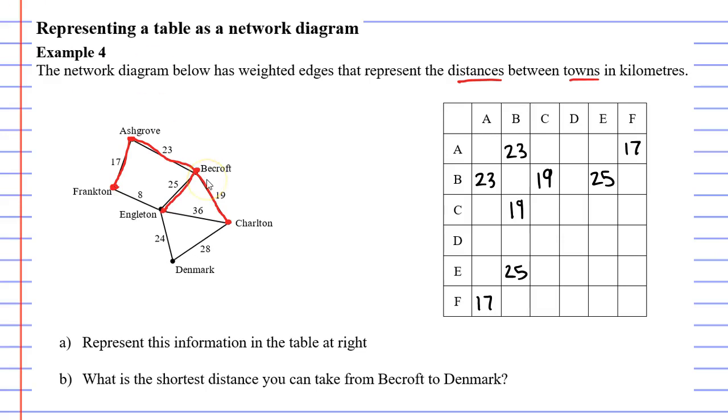All right, let's go now from Charlton. We've already got from Charlton to Beecroft, so we need to go from Charlton to Engleton and Charlton to Denmark. So Charlton to Denmark is a 28, so C and D lines up here and C and D lines up here as well. And Charlton to Engleton is 36, so C to E is at this spot and C to E also is down here, we have a 36.